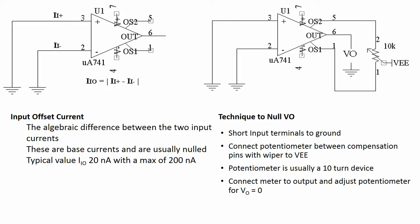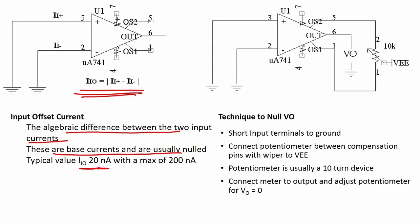Input offset current is the algebraic difference between the input currents — the base currents — and is usually nulled. The typical value is 20 nanoamperes and the maximum is 200 nanoamperes.